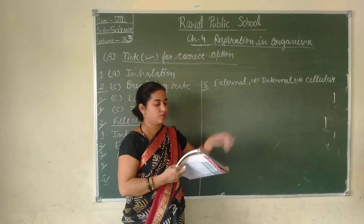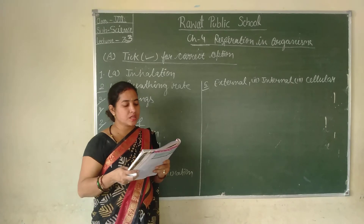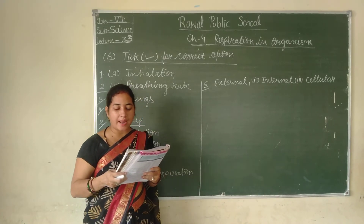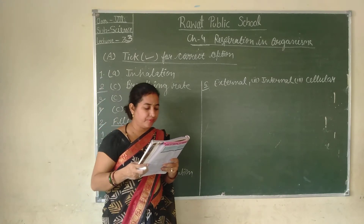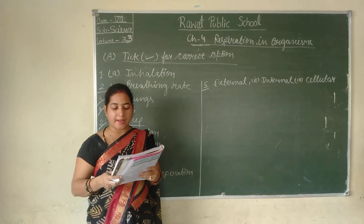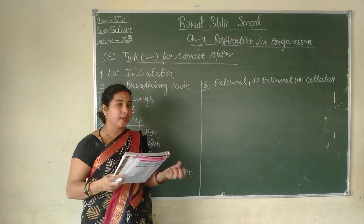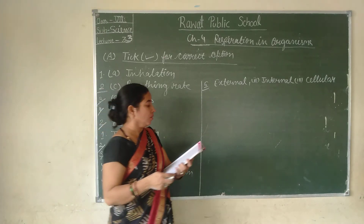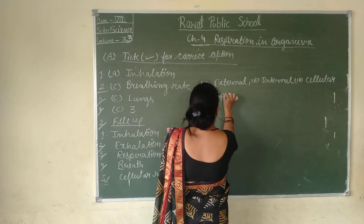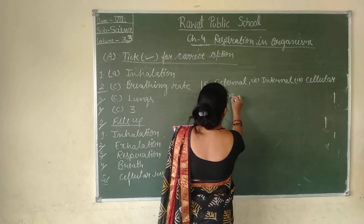The seventh question is: cockroaches have openings or pores on both sides of their body through which air enters. These openings are called spiracles. The answer is spiracles.